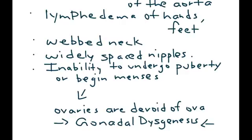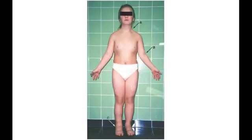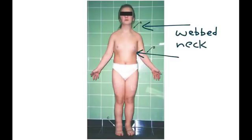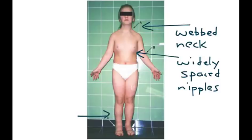Here are a few pictures. This is a patient with Turner Syndrome showing the classic webbed neck finding, and this patient also presents with widely spaced nipples. Here's another photo also showing the webbed neck. The patient also shows widely spaced nipples, and if you look at her feet, you can see she does have swelling — that is the lymphedema.